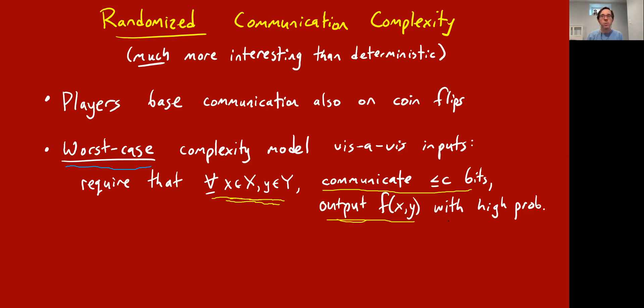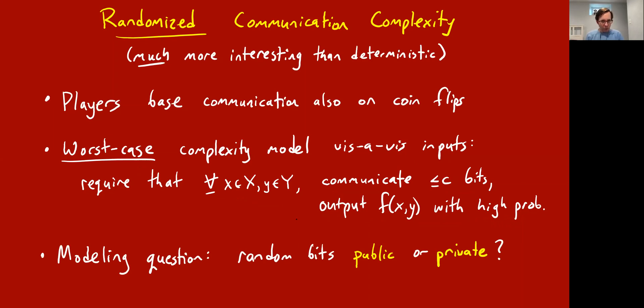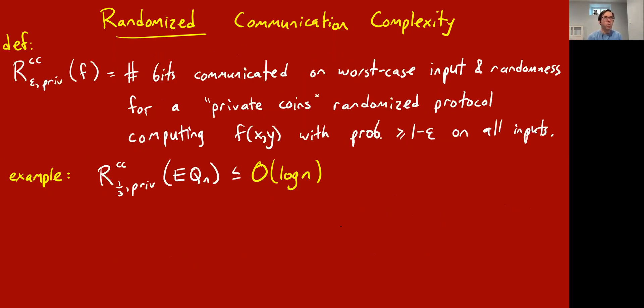One important modeling question whenever you're defining randomized communication complexity with more than one person involved is whether the random bits are public or private. Private is the model you might first think of, where Alice gets her own coin that she can flip to help her decide what to do next, same with Bob, but Bob doesn't get to see Alice's coins and vice versa. Let's first make this definition with private coins. We'll use this notation R sub epsilon CC, which stands for communication complexity. It's the number of bits needed to communicate on worst-case input and worst-case coin flip outcomes for a private coins randomized communication protocol that for any input x and y gets the correct answer with probability at least one minus epsilon.